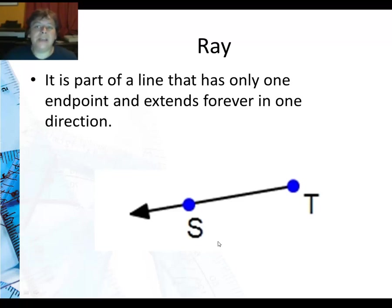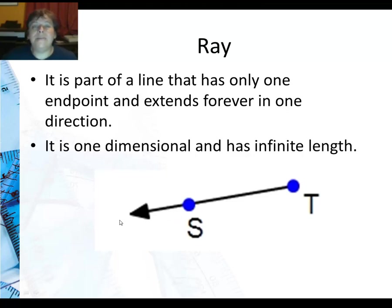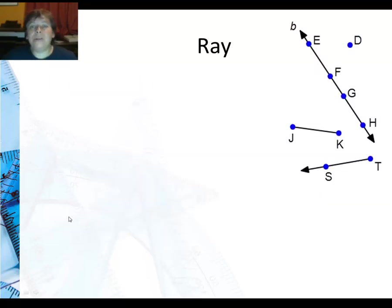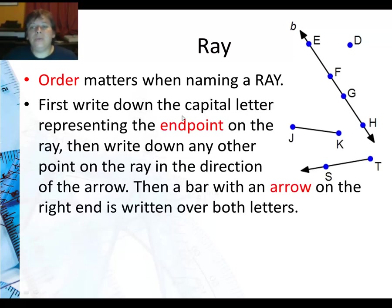Now a ray is part of a line that has only one endpoint and extends forever in one direction. So you can see here's the endpoint and it goes forever in this direction. It is one dimensional and has infinite length because we just said it goes forever. Now order does matter when naming a ray because it doesn't go in both directions, it just goes in one direction. So first what we do is we write down the capital letter representing the endpoint on the ray. Then we write down any other point that's off in the direction we're trying to represent. We put a bar over both letters and an arrow for the direction letter.